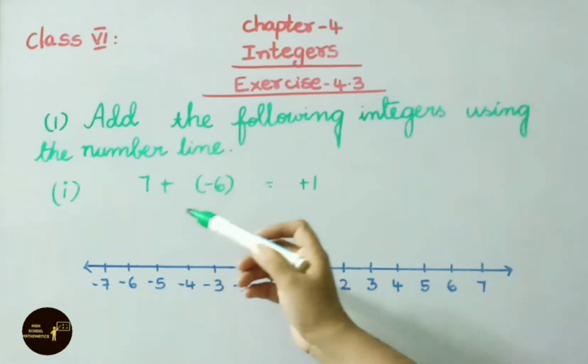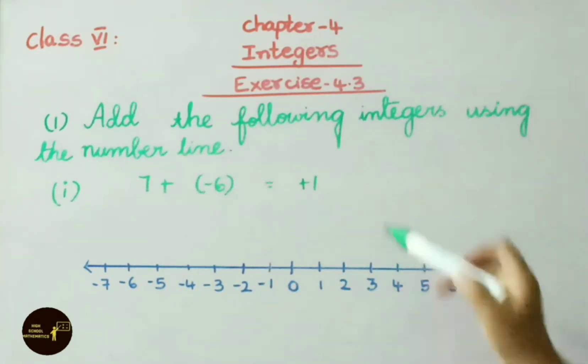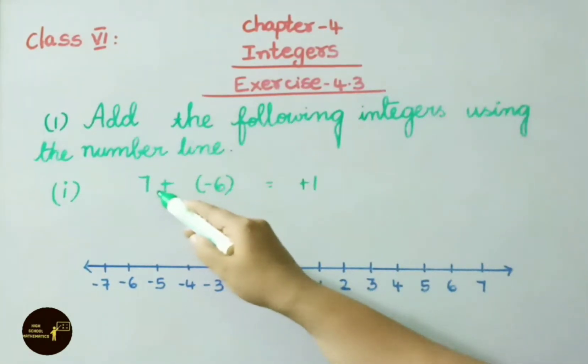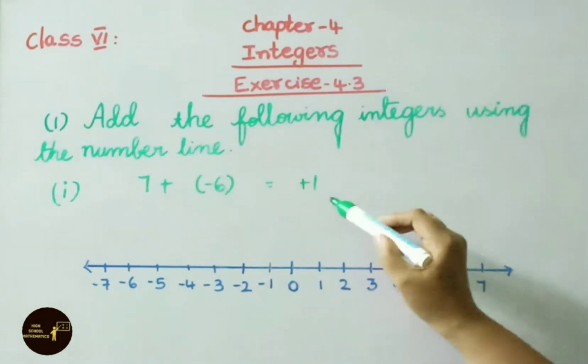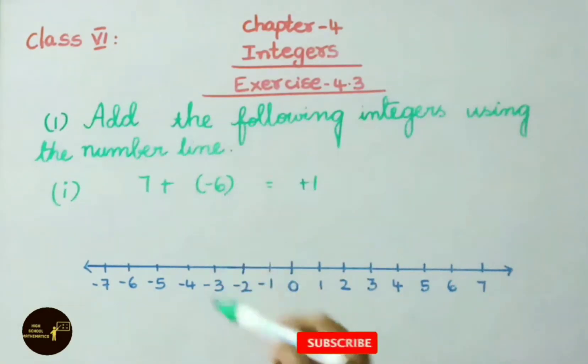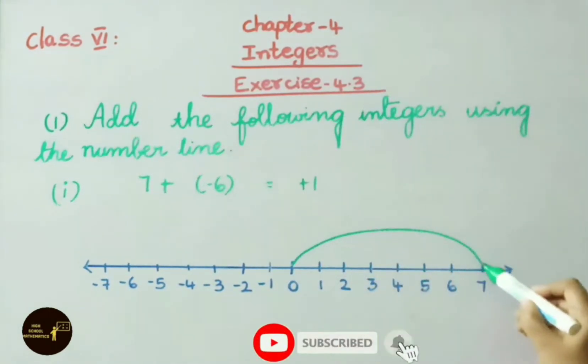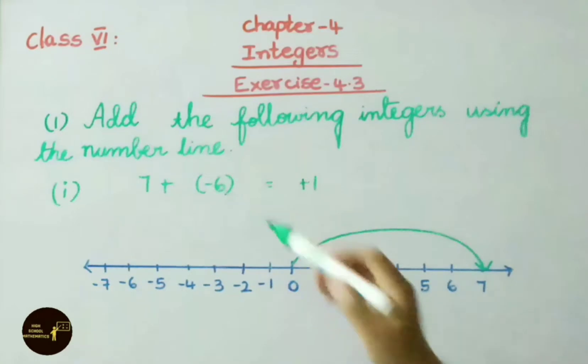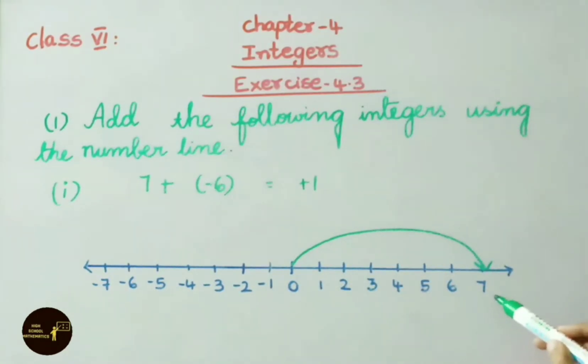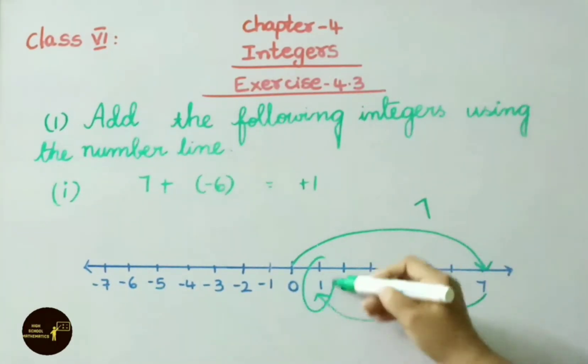See the first question, 7 plus minus 6. So 7 minus 6 is 1. Here 7 is greatest and its sign is positive, so we have to write plus 1. Now let us show this on the number line. First we have to show 7, zero onwards 7. Now minus 6, so backward count from 7: 1, 2, 3, 4, 5, 6. So 1 we have to show. So plus 7 minus 6 we get answer plus 1.